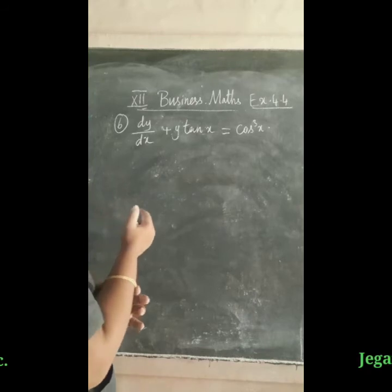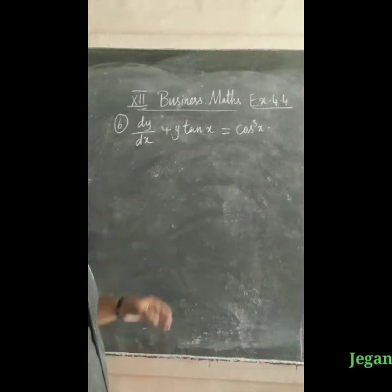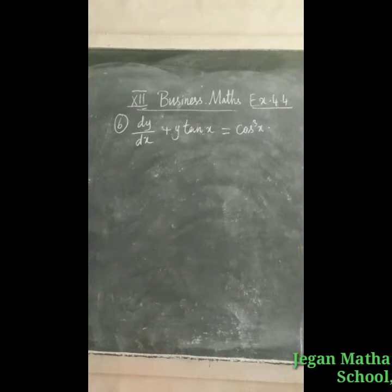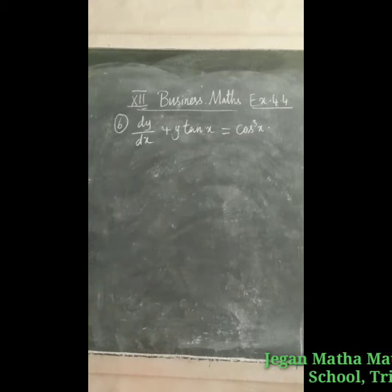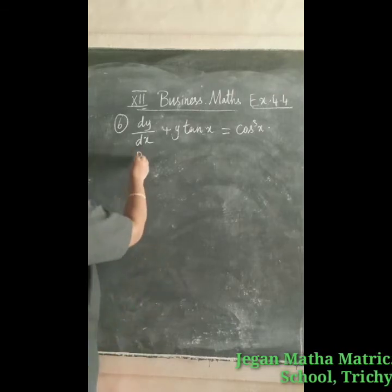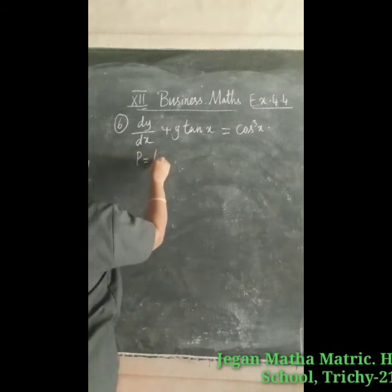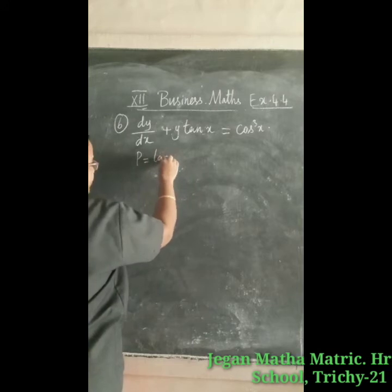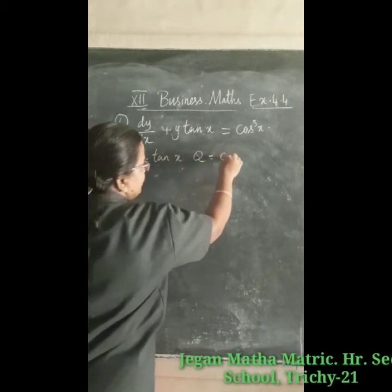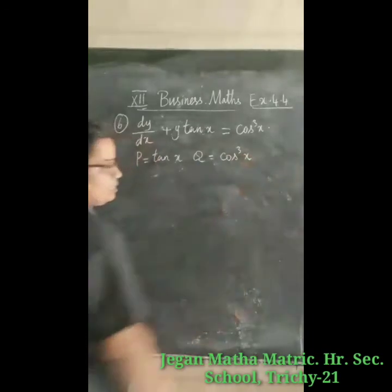The next, sixth question is: dy/dx + y·tan x = cos³x. It is in the linear form dy/dx + py = q. Here p is equal to tan x and q is equal to cos³x.